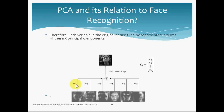You see these weights: w1, w2, and so on to wk, and these are the linear weighted sum of these icon faces.